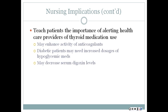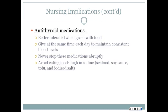Teach patients about the importance of alerting their healthcare providers of thyroid medication use, because it may enhance the activity of anticoagulants. Diabetic patients may also need increased dosages of their hypoglycemic medications, and thyroid drugs may decrease serum digoxin levels. For antithyroid medications, they are better tolerated when given with food. Take them at the same time each day to maintain consistent blood levels, and never stop these medications abruptly, as this can cause a thyroid storm which can be life-threatening. Patients should avoid foods high in iodine like seafood, soy sauce, and tofu, as these can alter the drug's effectiveness.